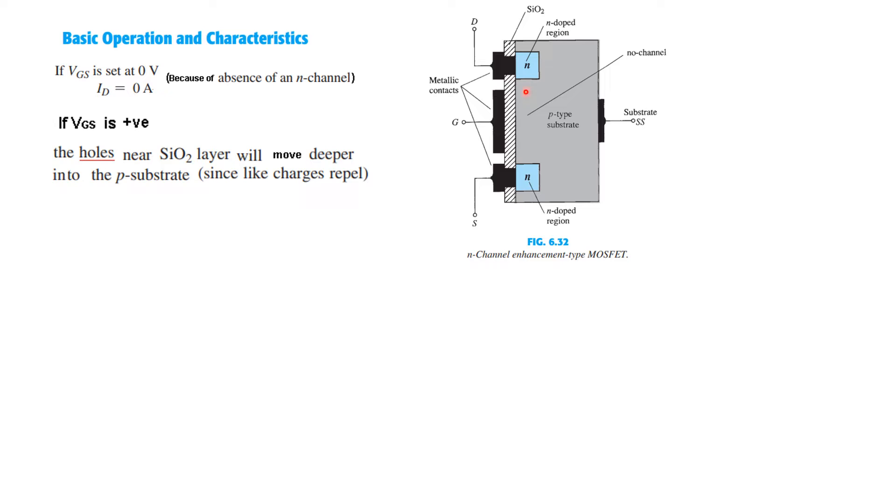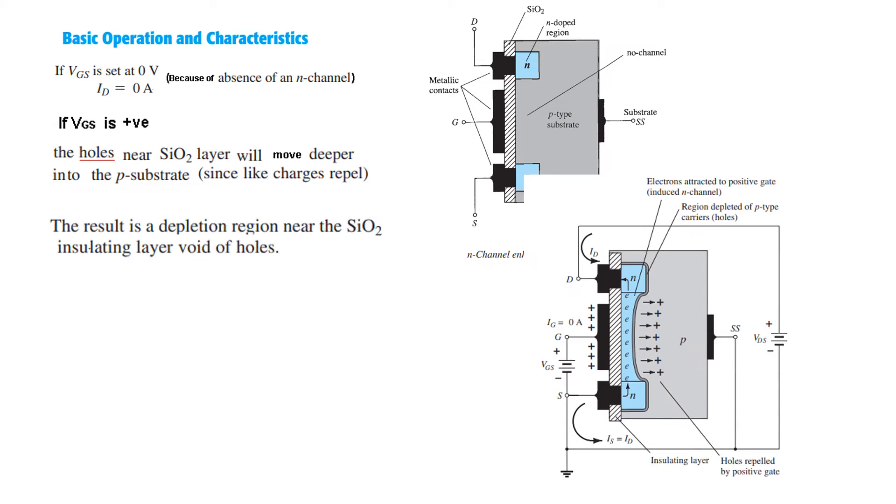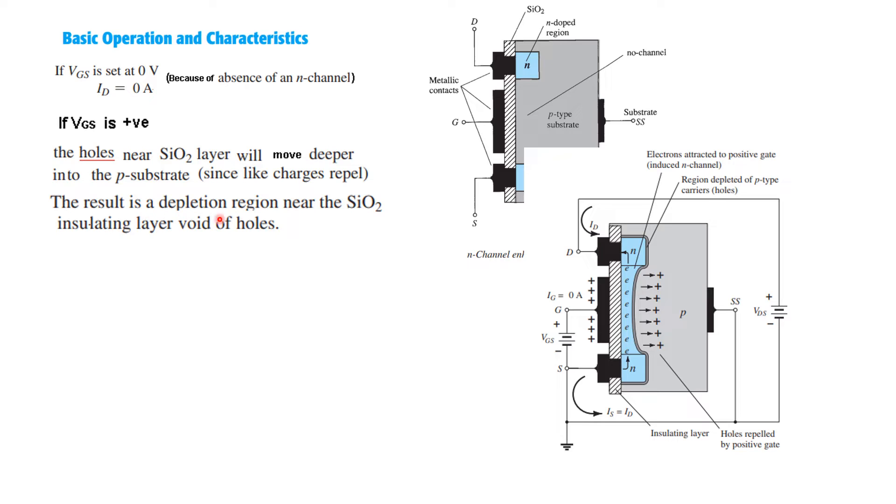And any holes here will now move away from it because there is a positive charge here, and you know that like charges repel, so the holes will move from this area. And what will happen as a result? The result is a depletion region. So there will be a shortage of holes here. That means there will be a majority of electrons now. The holes have moved away from here and there will be majority of electrons, so it's like forming another N channel in this region. And this will help in the conduction of current.